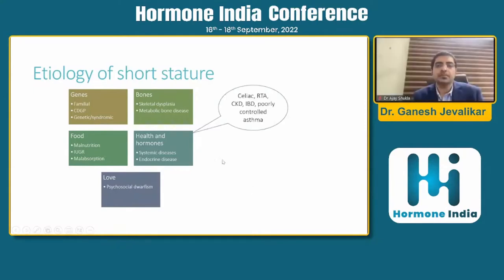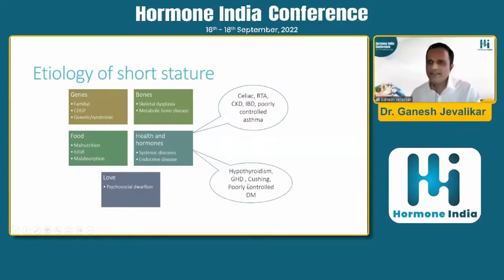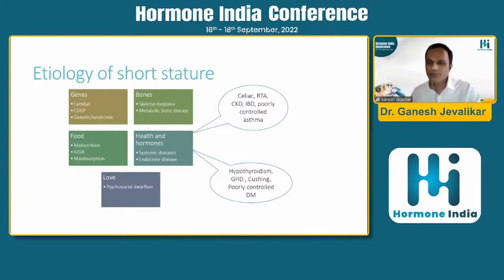During puberty, sex steroids and their augmentation of growth hormone secretion drive the pubertal growth spurt. A loving and caring atmosphere is also needed — significant family discord or psychosocial problems can lead to short stature. Many systemic diseases have obvious symptoms, but certain conditions can present with short stature alone: celiac disease, renal tubular acidosis, chronic kidney disease, inflammatory bowel disease, and even poorly controlled asthma without obvious history. Common endocrine conditions include hypothyroidism — more common than growth hormone deficiency — Cushing syndrome, and poorly controlled diabetes.